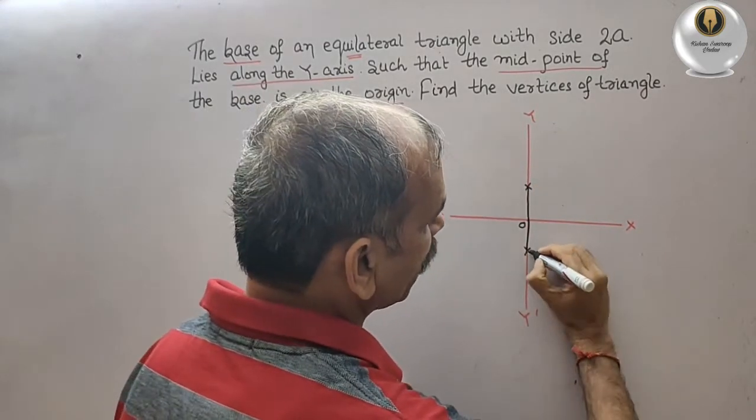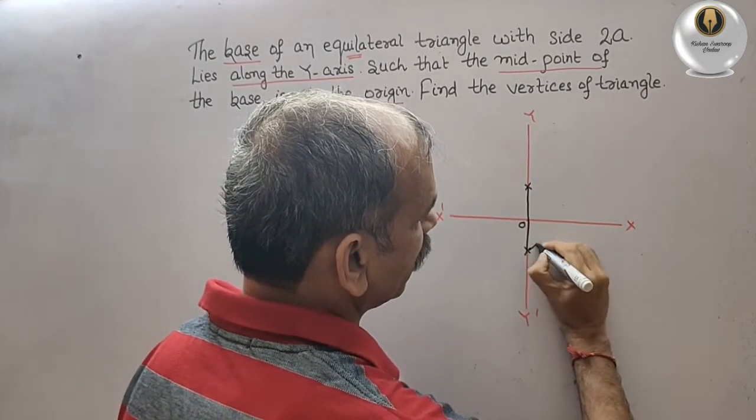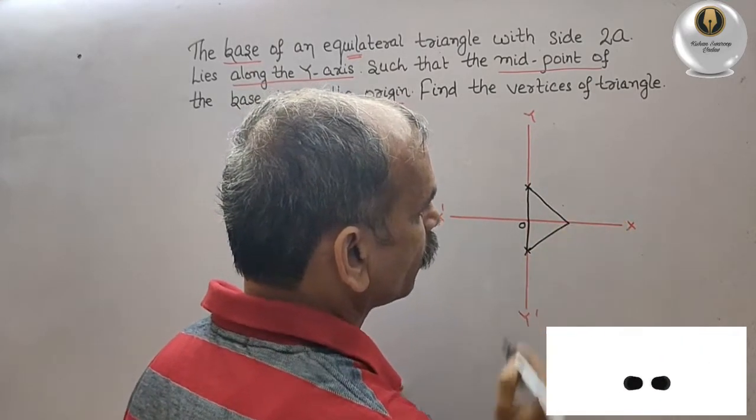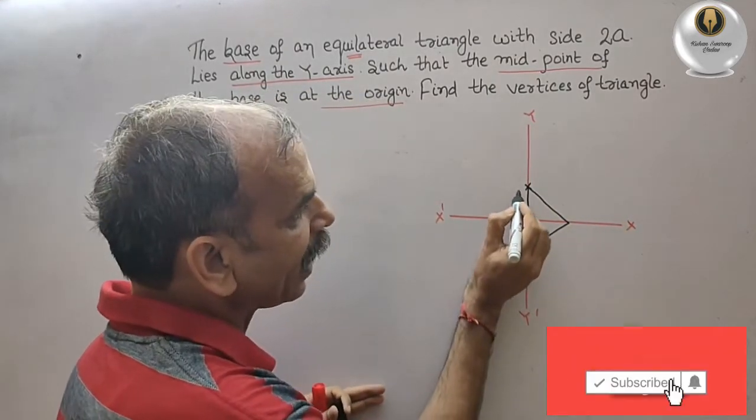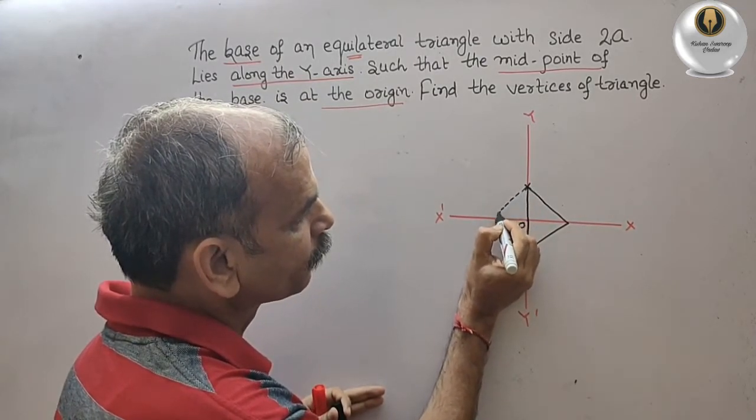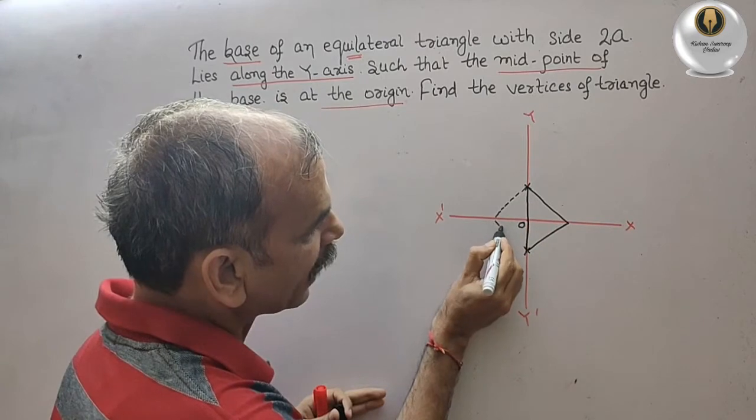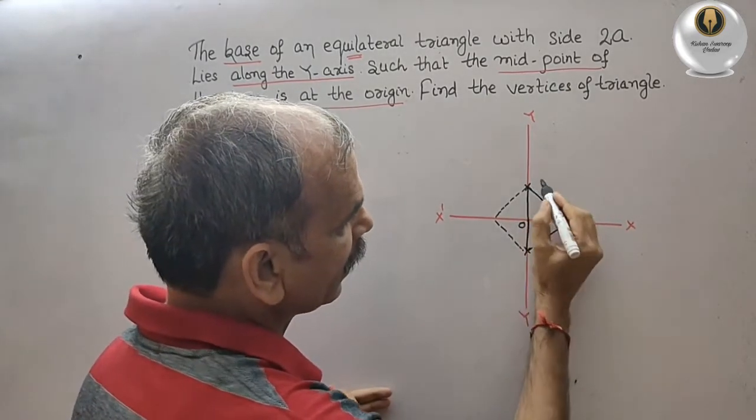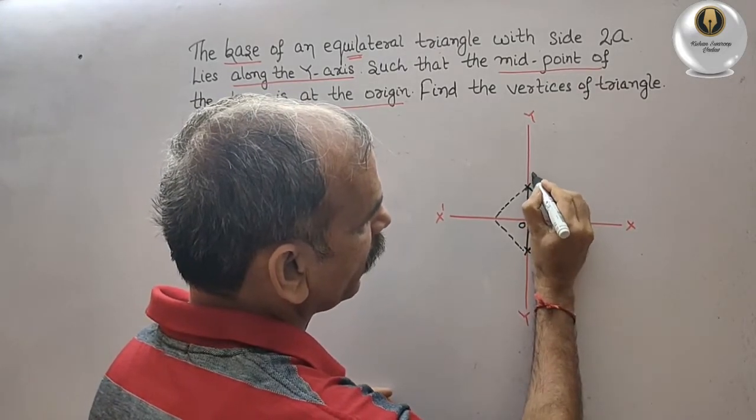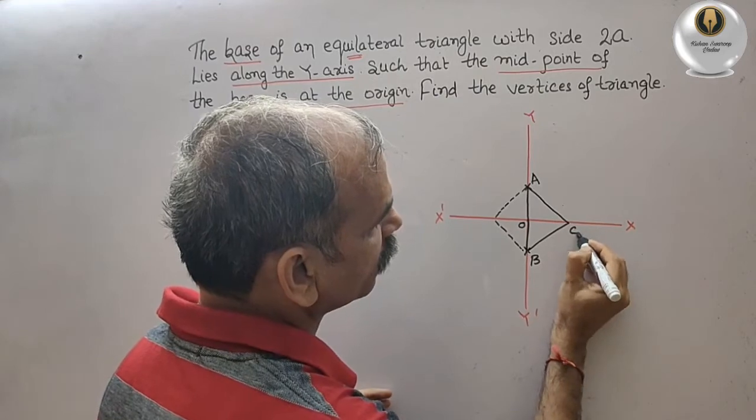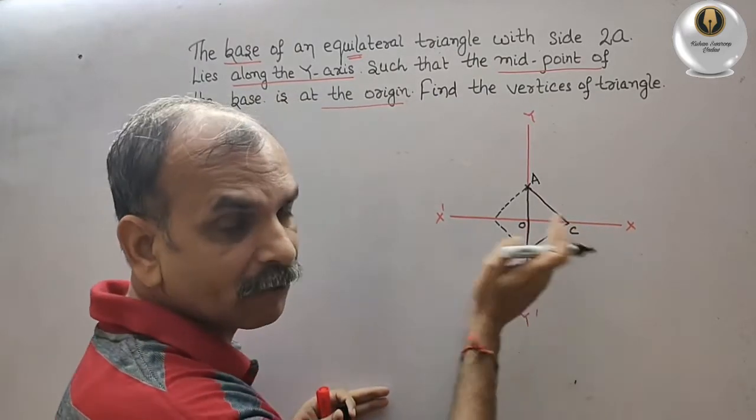So that means you can see what happens. This is the base, so now this is your A, this is your B, this is your C. So the left side, we have to find out the vertices of triangle.